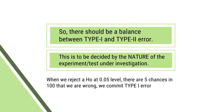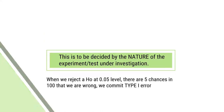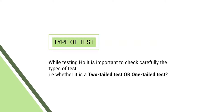So there should be a balance between type 1 error and type 2 error. This balance is to be decided with respect to the nature of the experiment and the nature of the test under investigation. The sensitivity of the test will help in deciding this factor. When we reject a null hypothesis at 0.05 level, there are 5 chances out of 100 that we are wrong — we commit type 1 error.